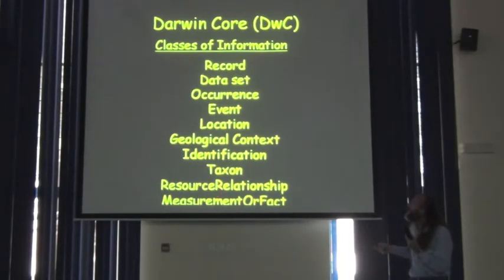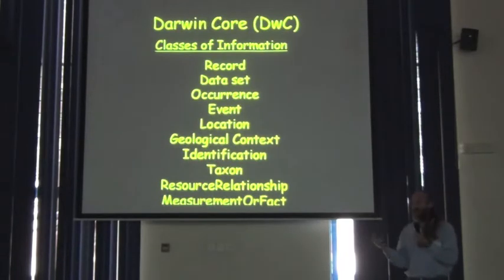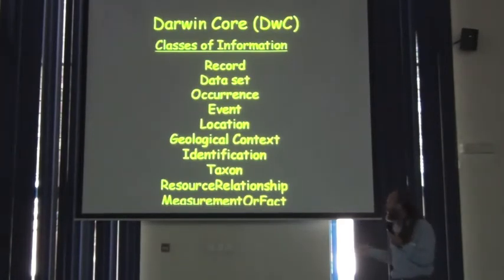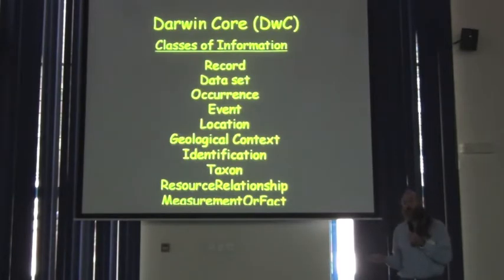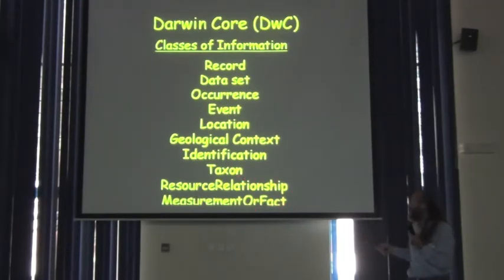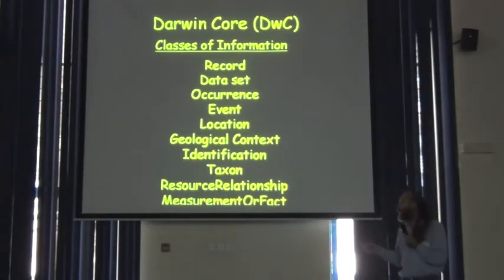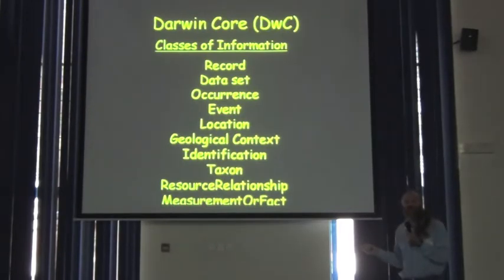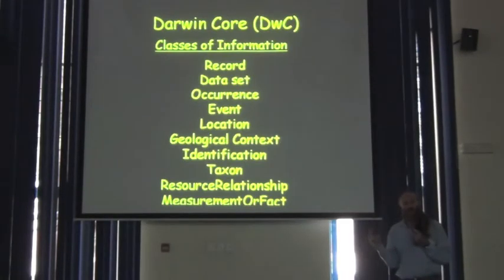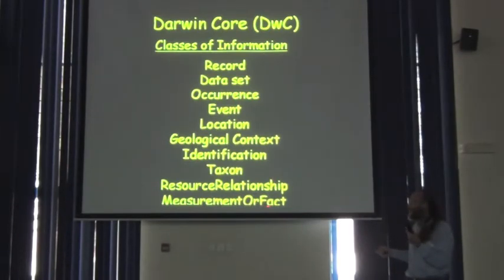Then we have two other classes of information that relate the rest of this together. Resource relationships allow two different records to be associated with each other — this would allow you to do things like parasite-host interactions. And then measurements or facts are basically a miscellany of all the things that you might want to measure or say about a record. The last two of these are special and you won't find them in a simple flat file, because they have the quality that you probably want more than one of them per record — in other words, it would be very difficult to put them into a spreadsheet. The last two sets of terms are part of the full generic schema.